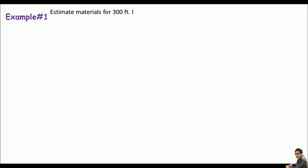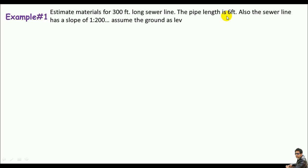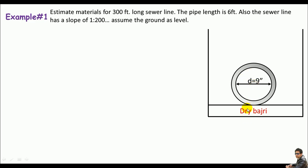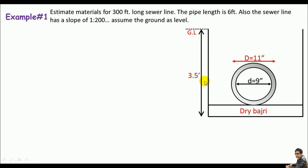We will do estimation for this section. If you are asked to estimate materials for a 300-foot-long sewer line, the pipe length is six feet — remember that six feet represents the length of one pipe. The sewer line has a slope of 1:200 and the ground is level. The interior diameter is nine inches, at the base we have dry bajari, the ground level is above, and the external diameter is 11 inches, meaning the pipe thickness is one inch. The trench depth is 3.5 feet and the breadth is 3 feet.